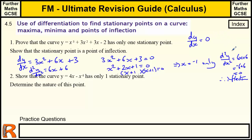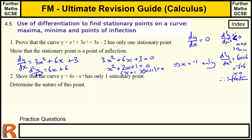When d²y/dx² is less than zero, that's a maximum, and when it's greater than zero, that's a minimum — which can seem counterintuitive. I always think about it being the opposite way round to what you'd expect.